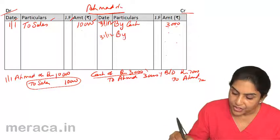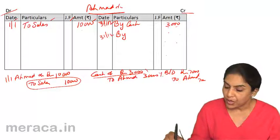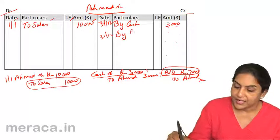On the credit side, by convention, we write, by what? Corresponding account. That is, bad debt account.